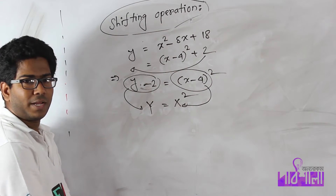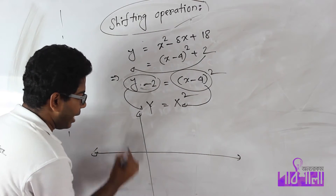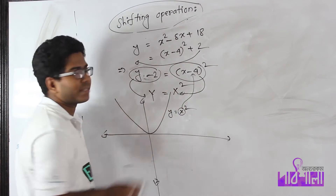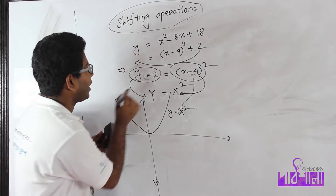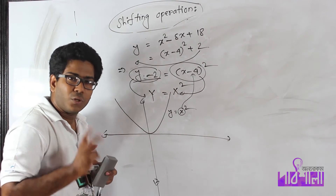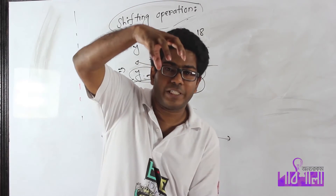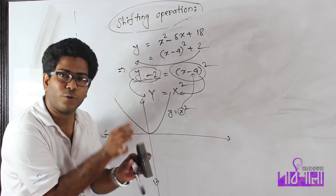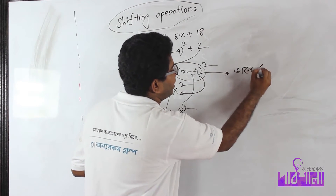y equal to x squared — we know that y equal to x squared, and this is the graph from a table. If x is equal to x minus 4, then the shift is equal to 4. And y minus 2 equals y minus 2, which shift is equal to 2. y minus something — which shift is equal to y?